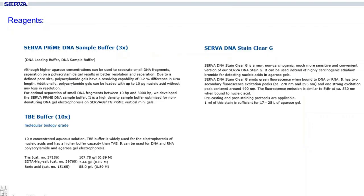The only additional reagents you need are a running buffer and a sample buffer. The best running buffer is the normal TBE buffer you use for agarose gels — you use it as well for polyacrylamide gels. The sample buffer is quite new in our portfolio and is 3x, so you add one part to two parts of your sample. It is specially designed to give the best result within a vertical well, so the DNA inside your sample is best organized and loaded with this buffer.